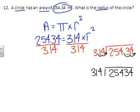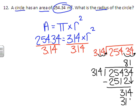And when we do that, 314 goes into 2,543 eight times, so I'm going to put the 8 above the 3. 8 times 314 is 2,512. So we're going to subtract and bring down the 4. And 314 goes into 314 one time. So now we have 81 equals r squared.